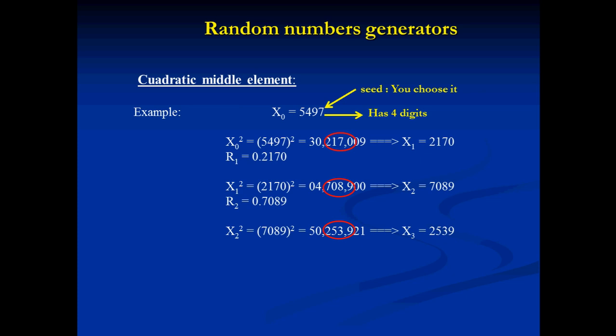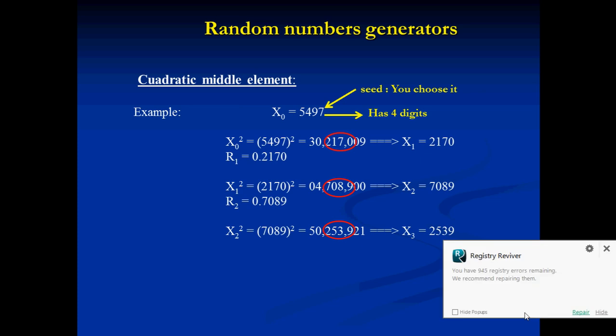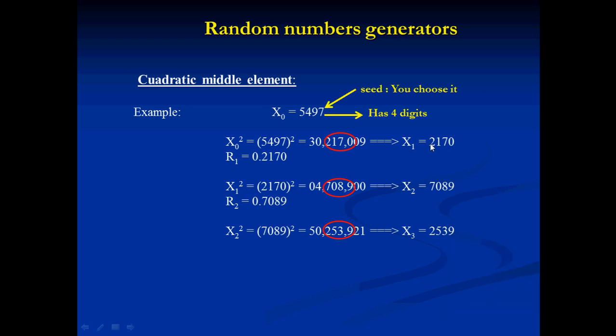We choose four digits because the seed had four digits to begin with. If the seed we choose is five, six, or more digits, we extract that same number of digits from the middle of the squared result. Returning to our example, 5497 squared gives us 30,217,009. We choose the four digits in the middle, and that is our X1 variable — our first result.